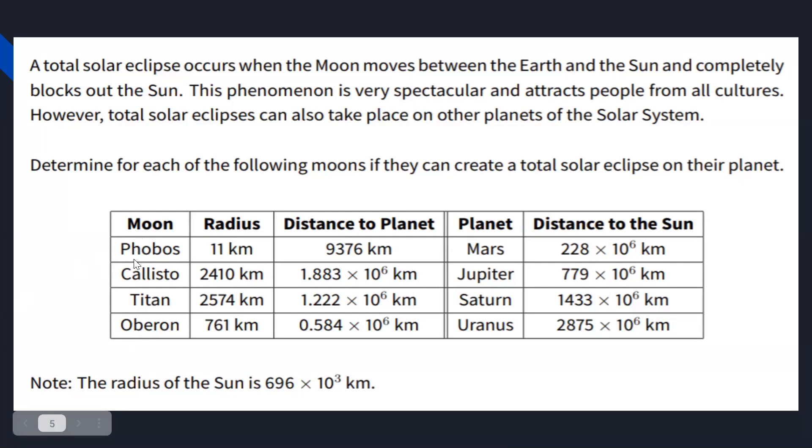Here, Phobos is the moon of Mars, Callisto is the moon of Jupiter, Titan is the moon of Saturn, and Oberon is the moon of Uranus. You know, there are two types of solar eclipse, which is total solar eclipse and partial solar eclipse. So in order to understand this question, we have to know what a total solar eclipse is. So I'll show you a video for that.